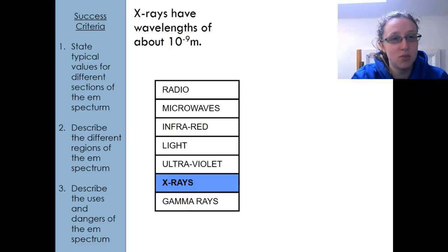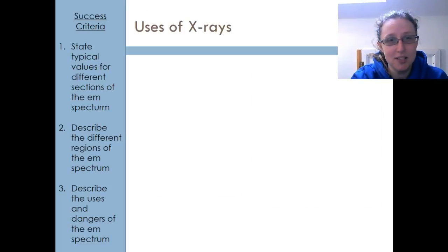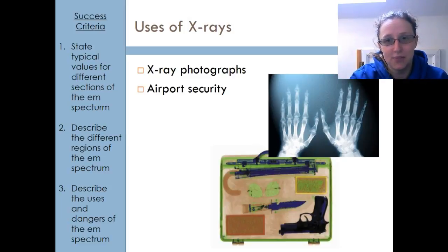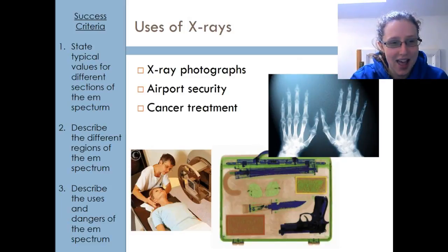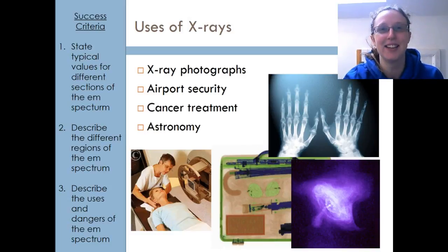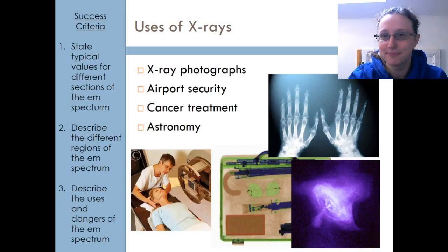Next up we've got X-rays. X-rays have a wavelength of about 10 to the minus 9 meters. Uses include X-ray photographs, airport security, cancer treatment, and astronomy.